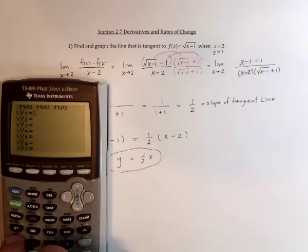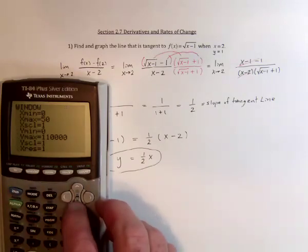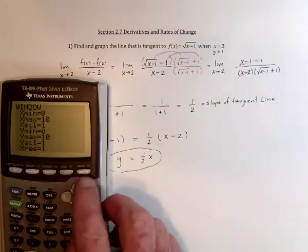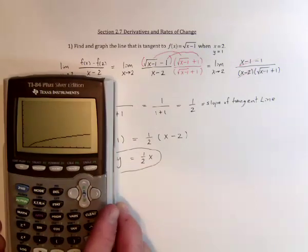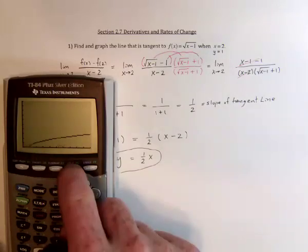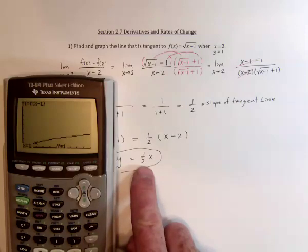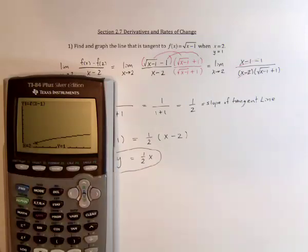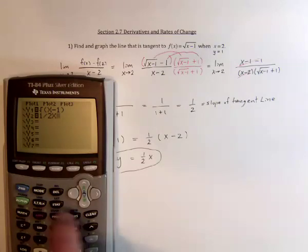First, graph the original function, which is the square root of x minus 1. Let me change the window — we need 0 to 10 for x values, and we don't need any negative values. The same with the y values, 0 to 10 should be fine. There's the square root function. At x equals 2 and y equals 1, we should be able to graph the line y equals 1 half x, and it will basically just graze the graph right at that point.